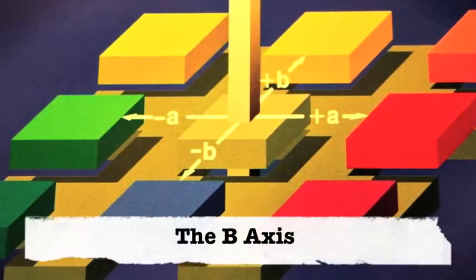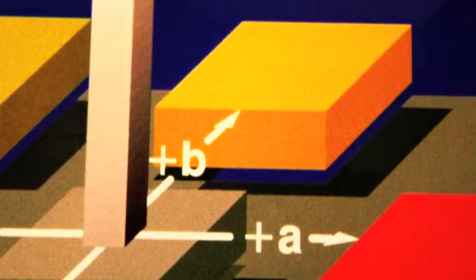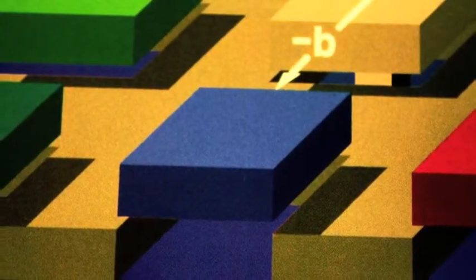Last is the B-axis, which represents the blue to yellowness of the product. A positive B value would be a more yellow product, while a negative B value would be a more blue product.